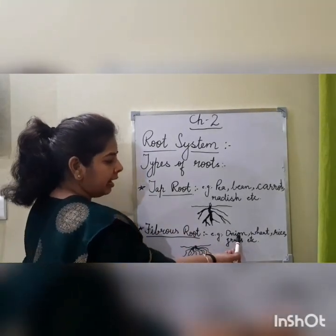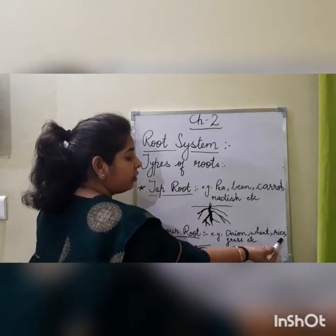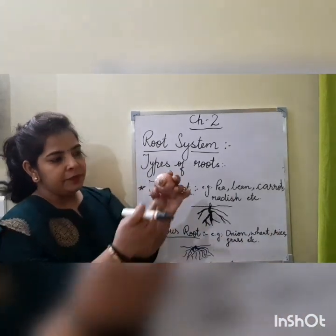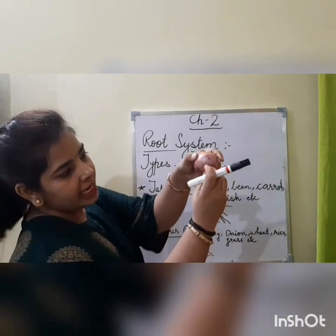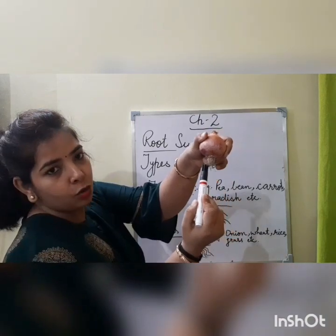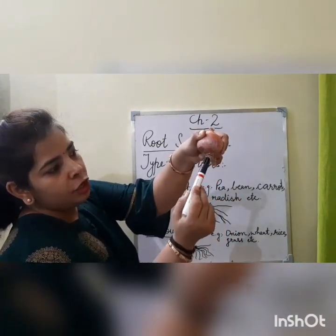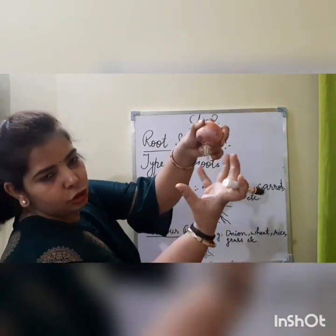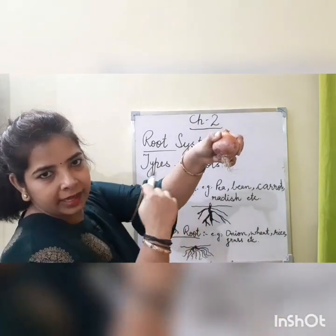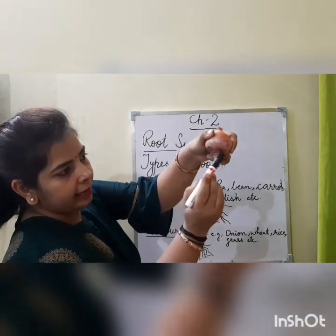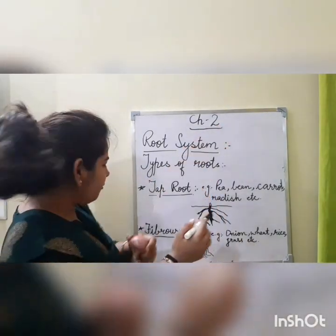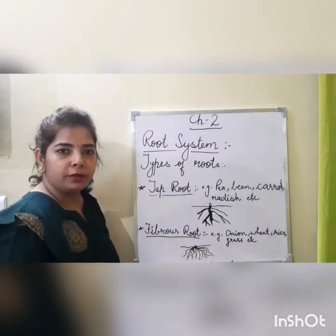Examples of fibrous root are onion, wheat, rice, grass, etc. Look at this onion — these are its roots. You can see there is no main root here; there is just a cluster of roots. There is no main root and no secondary root. Onion is an example of fibrous root.